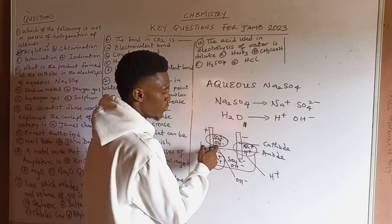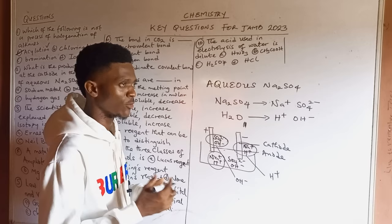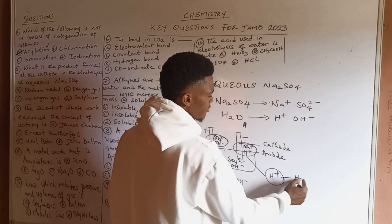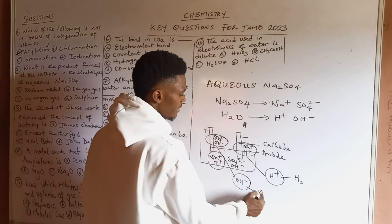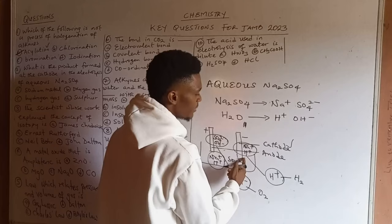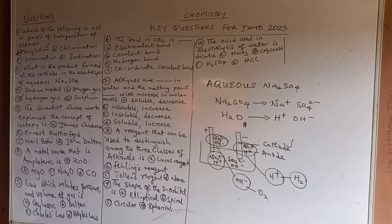Between SO4²⁻ and OH⁻, OH⁻ is lower in the ECS and will be discharged at the anode. The gas associated with hydrogen ion discharge is hydrogen gas, and with OH⁻ discharge is oxygen gas. Since the question asks about the cathode product, the answer is hydrogen gas — answer C.